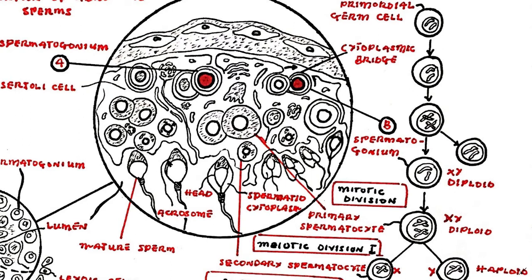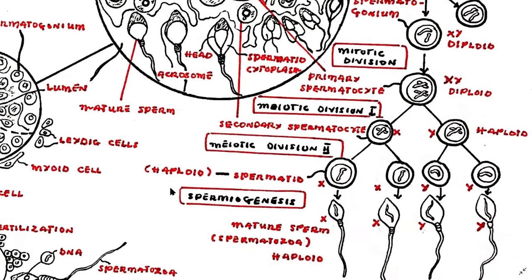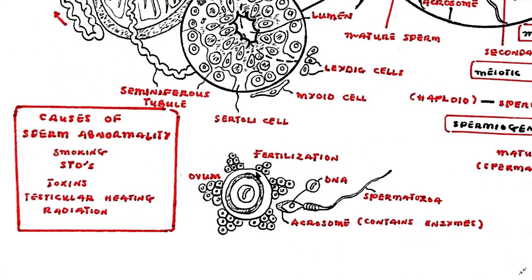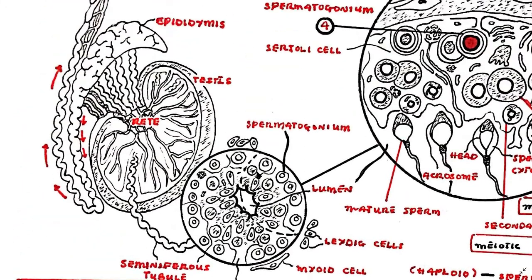The acrosome contains enzymes that will help the sperm penetrate the outer layers of the ovum during fertilization. At the end of spermiogenesis the spermatids have now matured to become spermatozoa. Generally spermatogenesis takes around 64 days to produce spermatozoa from the germ cells.